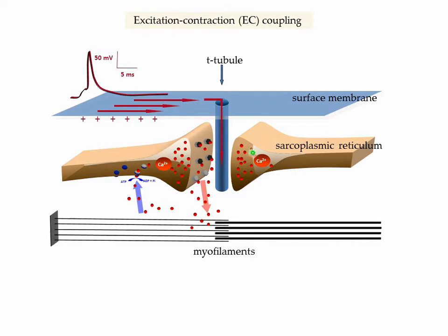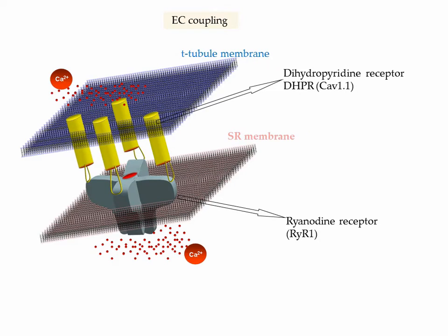If we look more closely into this region, here we have the transverse tubule membrane, here the sarcoplasmic reticulum membrane, and we have two sets of proteins facing each other. In the T-tubule membrane, these are the dihydropyridine receptors, the DHPR. They are voltage-gated calcium channels, and they are facing and likely directly communicating with another type of calcium channel, which is a calcium release channel — the ryanodine receptor, type 1, essentially, in mammalian muscle.